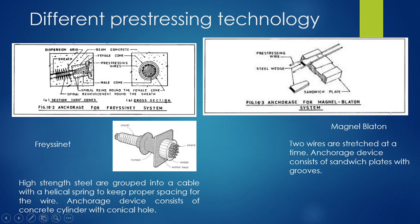The prestressing wires are placed into the anchorage device and these wires continue through. In the Magnel-Blaton system, many wires can be grouped together for prestressing, but only two wires are stretched at one time. The anchorage device is sandwich plates, and there is a groove in which these two wires are placed and anchored.